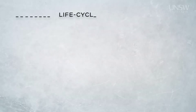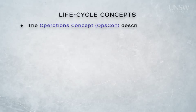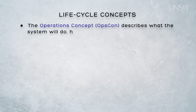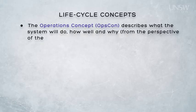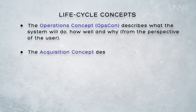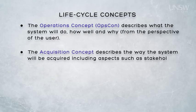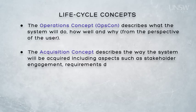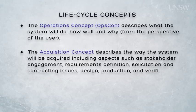Let's look at each of those lifecycle concepts in a little more detail. First, in terms of priority, is the OPS CON — the operations concept — because the business can then describe what it wants the system to do, how well and why, from the perspective of the user. Then the business talks about how it proposes to acquire the system. The acquisition concept describes the way in which the acquisition will proceed, including stakeholder engagement, requirements definition, solicitation, contracting issues, design, production, verification and so on.